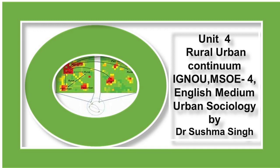The folk society has the following characteristics: it is small, isolated, non-literate, and homogeneous, with a strong sense of group solidarity. The ways of living are conventionalized into a coherent system which we call culture. Behavior is traditional, spontaneous, uncritical, and personal. There is no legislation or habit of experiment and reflection for intellectual ends. Kinship, its relationships and institutions, are the type categories of experience, and the family group is the unit of action. The sacred prevails over the secular, and the economy is one of status rather than of the market.